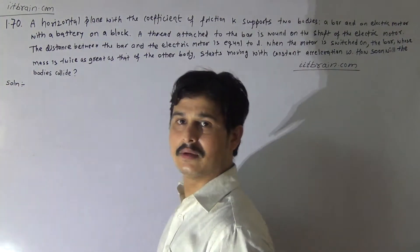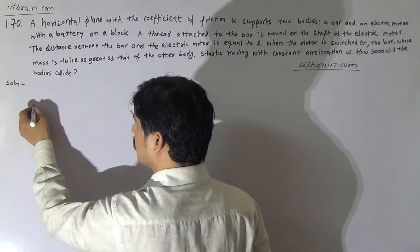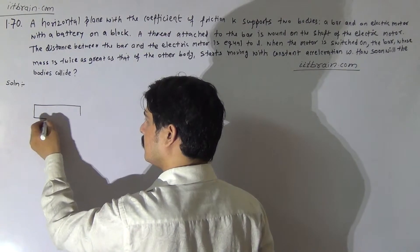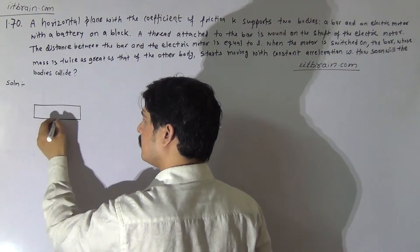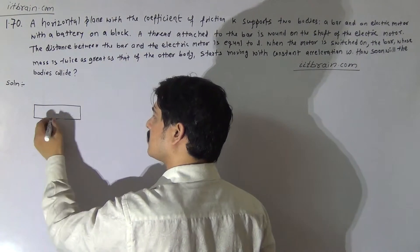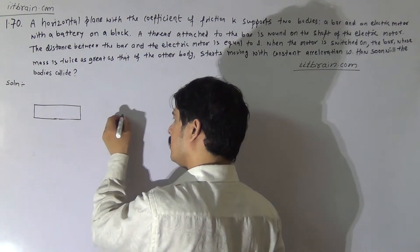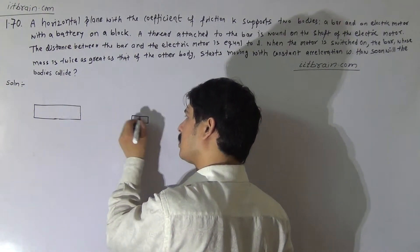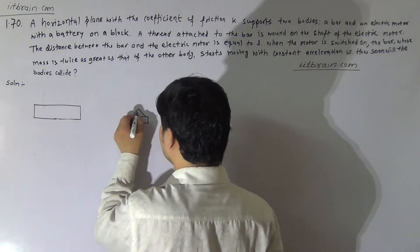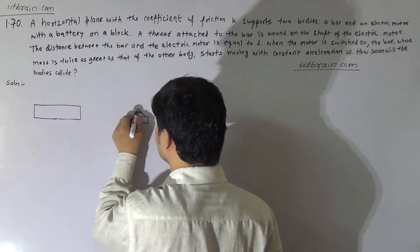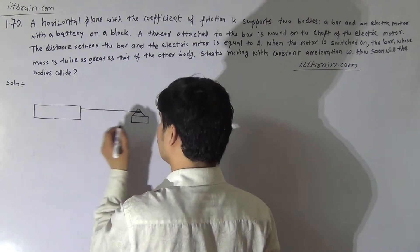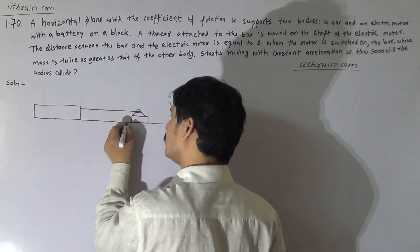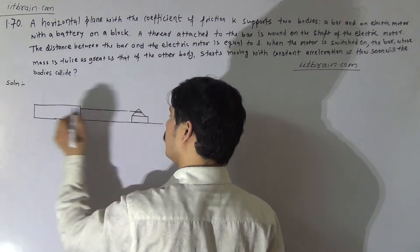Let's get a clear picture of the setup. Suppose this is the bar, and this is the block in which the motor is placed. In the shaft of the motor there is a string attached to the block. These two bodies are placed on the same horizontal surface — this is the block and the motor is placed on it.